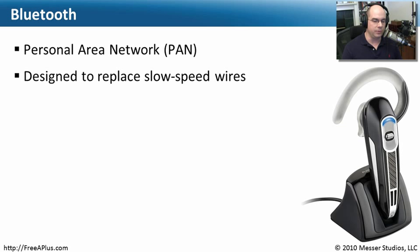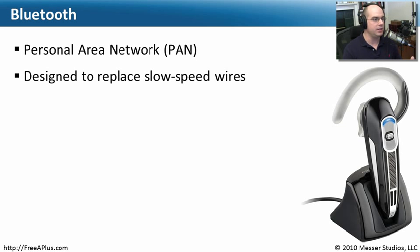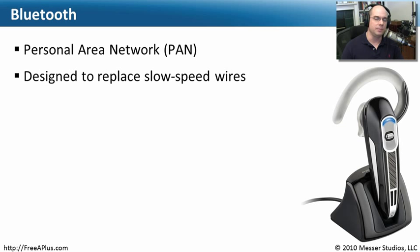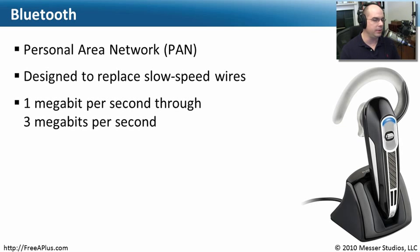Bluetooth was really created to replace a lot of wires. You see people with earpieces, like the one on the screen, where we used to have a wire going up to our head. Now we can have something completely wireless — we can concentrate on driving, talking, or walking without getting tangled up with wires. Since we're always close to our phone, Bluetooth as a personal area network was a great way to do that.